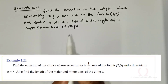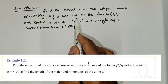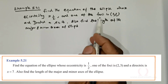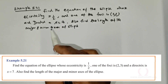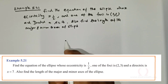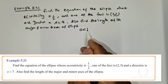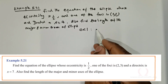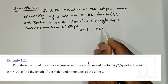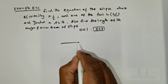We are given this question: find the equation of the ellipse whose eccentricity is 1/2 and one of the foci is (2, 3), directrix x = 7. Find the length of the major and minor axis. You should always remember that the eccentricity for an ellipse is less than 1, and for a circle the eccentricity is 0.